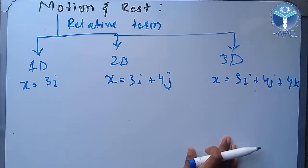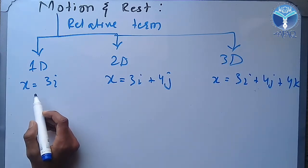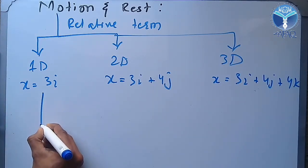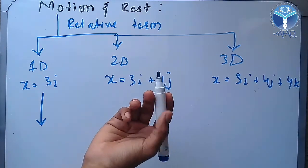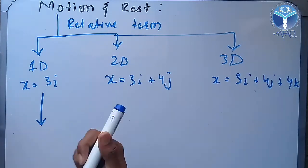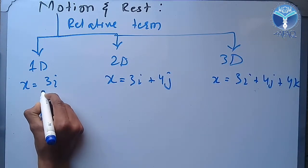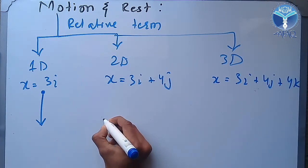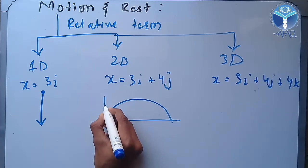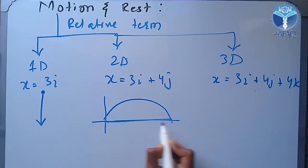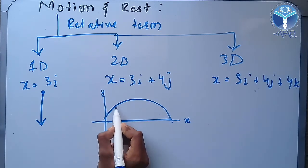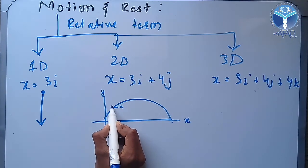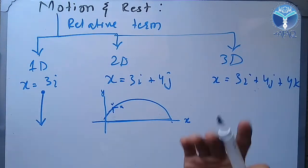For one dimensional motion, the example we can take is freely falling bodies. If we have a helicopter, an object, a football, or a ball, and we put it under gravity, which gives a vertical downward motion — that is one dimensional motion. For two dimensional motion, for example, we can take a projectile. We fire a projectile and it moves in the direction of the X axis and Y axis — that is two dimensional motion.